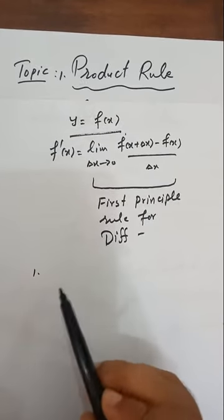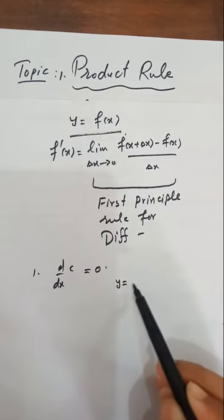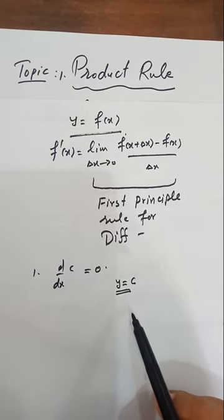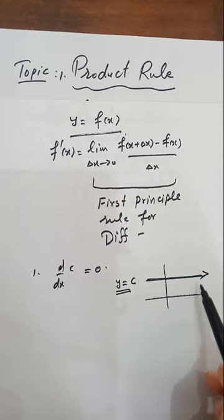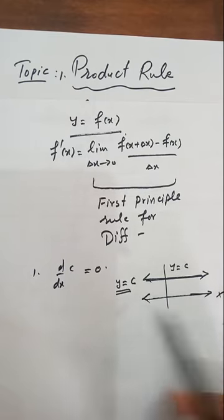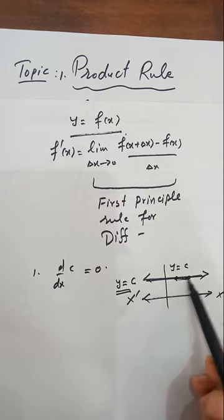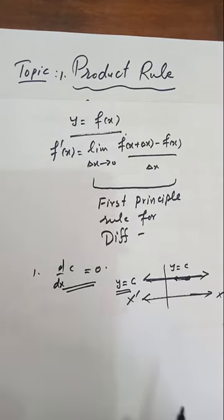We discussed the constant rule: the derivative of a constant will always be zero. If you consider a constant function y equal to c, the graph is a straight line parallel to the x-axis and there is no rise. The slope is rise over run, meaning y2 minus y1 divided by x2 minus x1. Since the y-coordinates are the same for any two points on this line, their difference is always zero, so the derivative of a constant is zero.